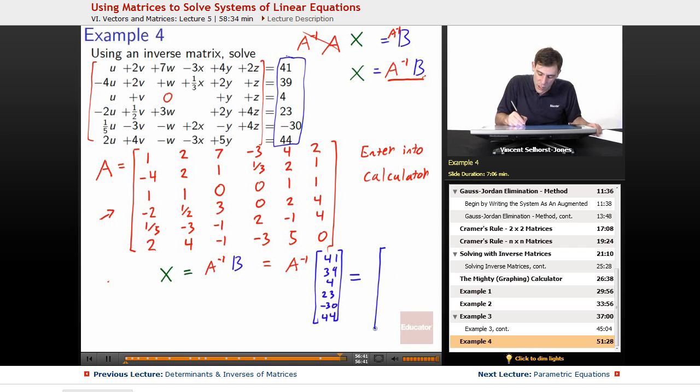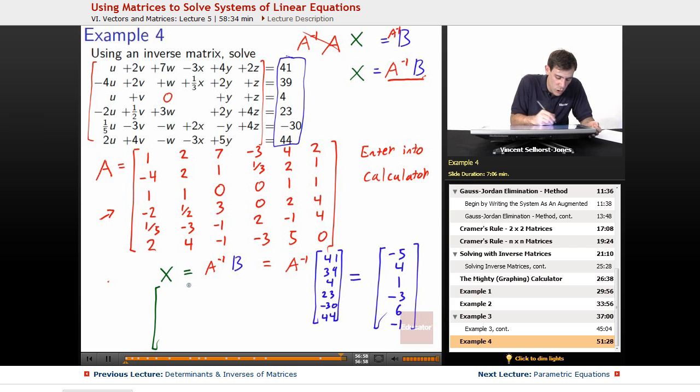This comes out to be the deliciously simple, negative 5, 4, 1, negative 3, 6, negative 1. So, we just figured out X equals our X as all of our variables at once. Well, X is equal to, what were all of our variables? It was U, and then we put in V, and then we put in W, and then we put in X, Y, Z. So, they go that order in our column.